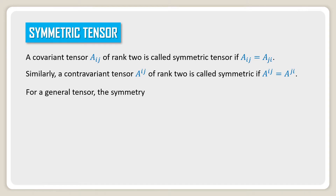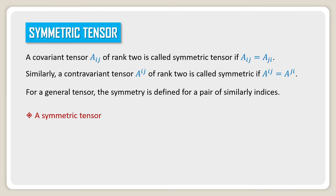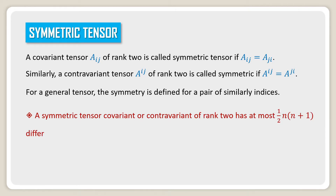For a general tensor, symmetry is defined for a pair of similar indices. A symmetric tensor, covariant or contravariant, of rank 2 has at most half n(n+1) different components in an n-dimensional space V_n.